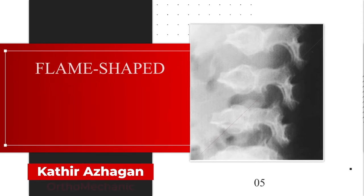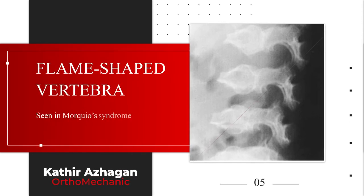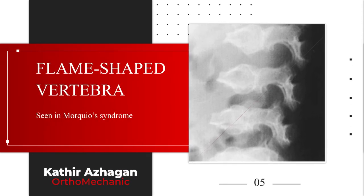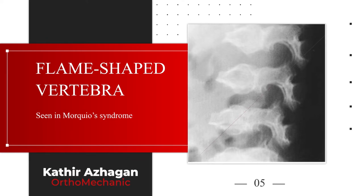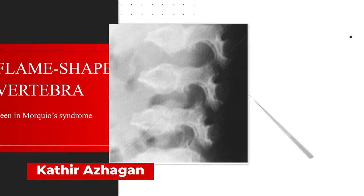Flame-shaped vertebra is usually seen with Morquio syndrome, which is mucopolysaccharidosis type 4. In this disease, the superior and inferior vertebral end plates taper to form a central beak, giving this characteristic flame-shaped appearance.